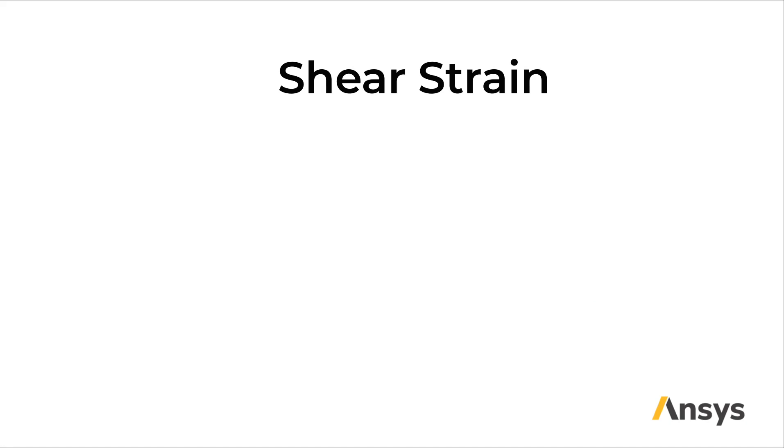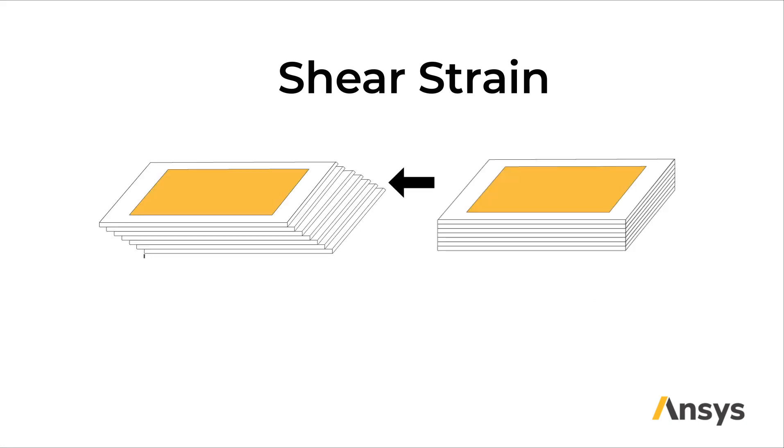Shear strain we can visualize again with our deck of cards. We can see in this image that our cards have sheared some distance W compared to the original length here, L. So shear strain is given by the tangent of gamma equal to W over L. Because shear strains are generally small, we can roughly equate this to gamma.